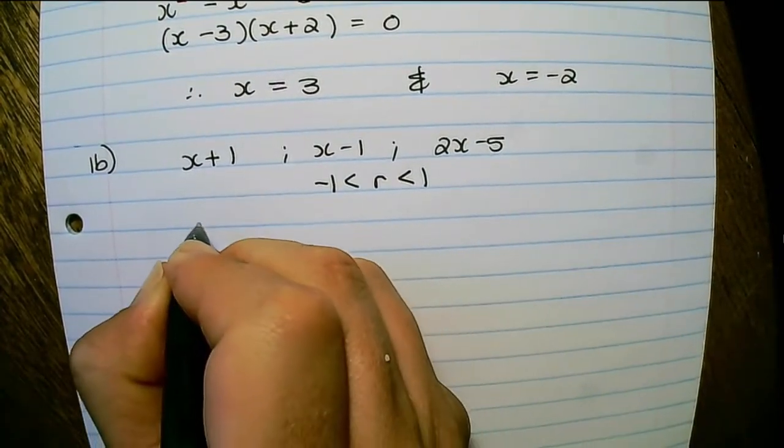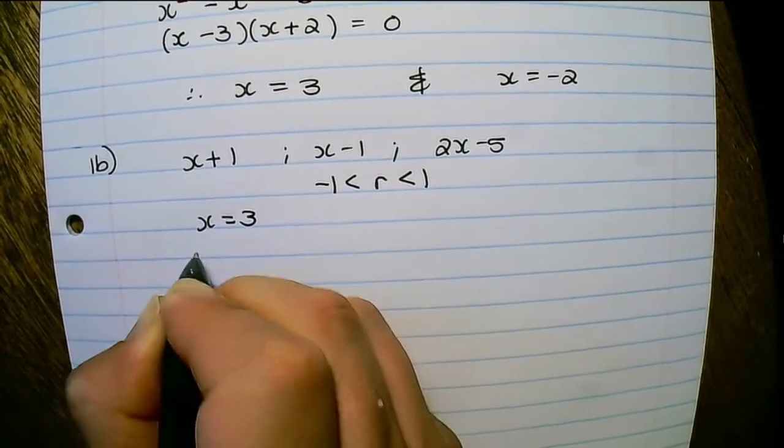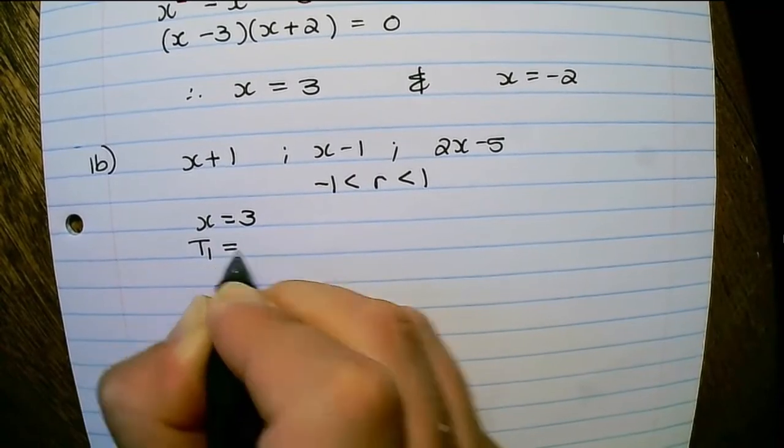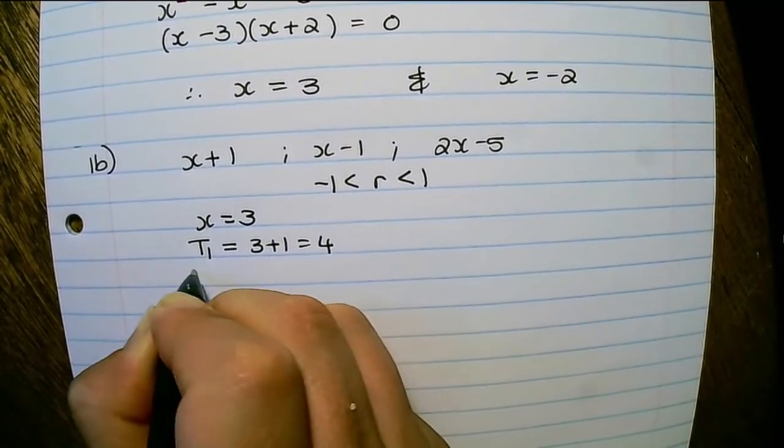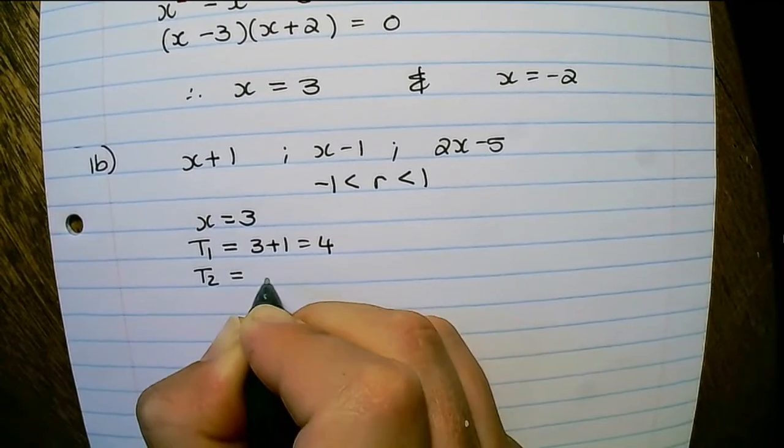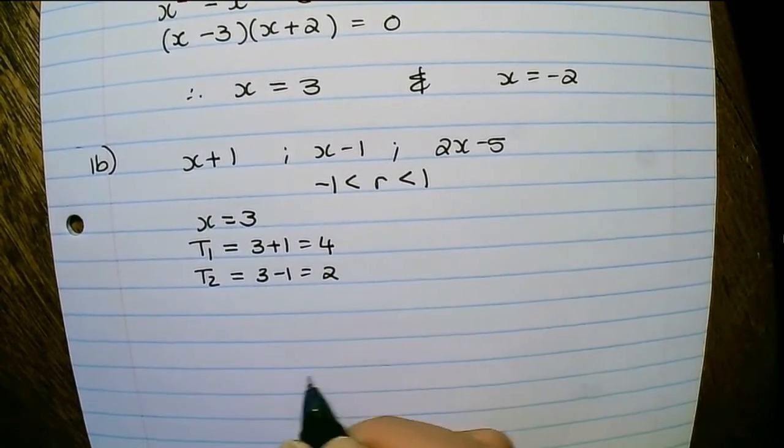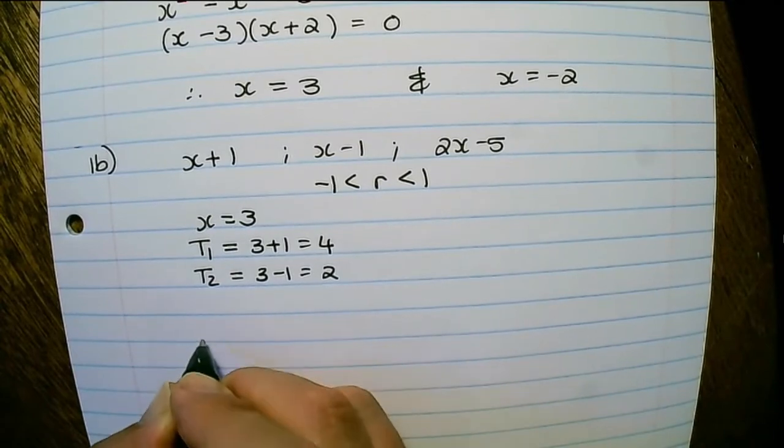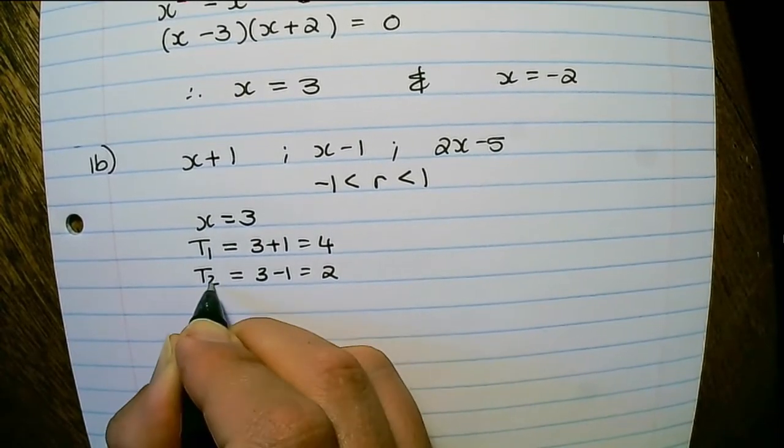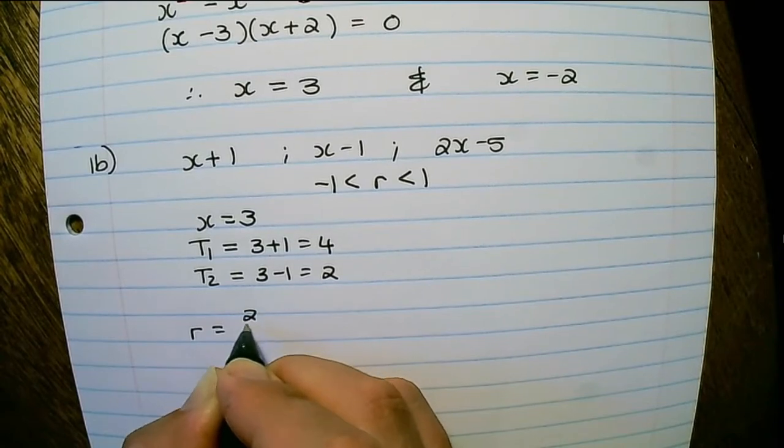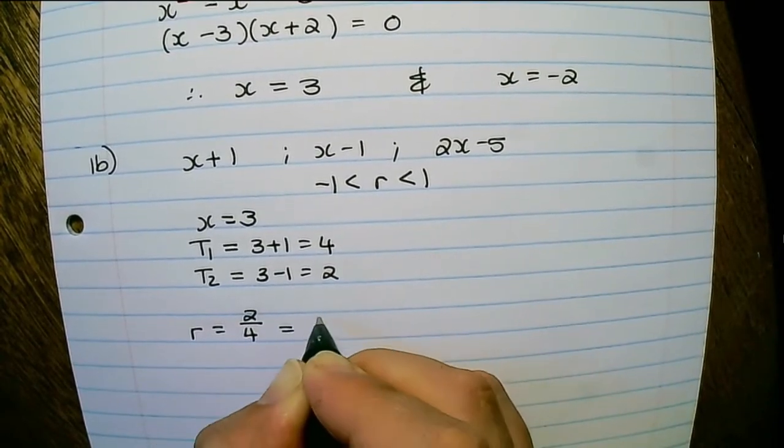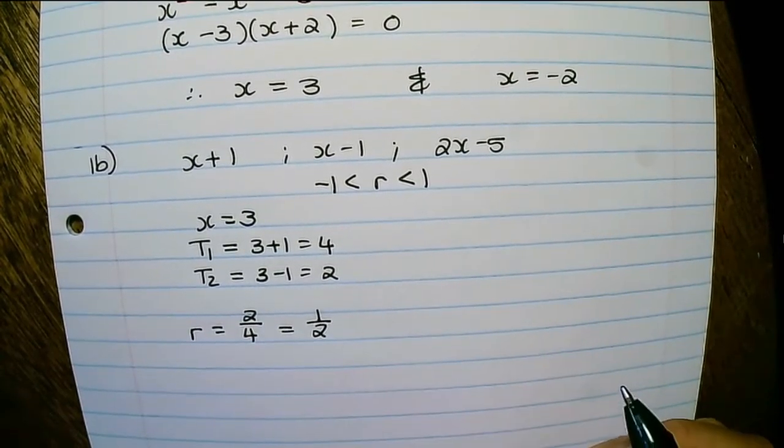So let's use x equals to 3. Then term 1 will be equals to 3 plus 1 which is 4, and term 2 would be equals to 3 minus 1 which is equals to 2. Now I have enough information to find the ratio which is term 2 divided by term 1. So it's 2 over 4, or I can say a ratio of a half.